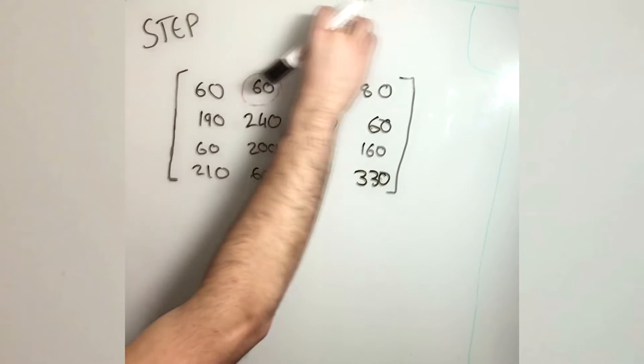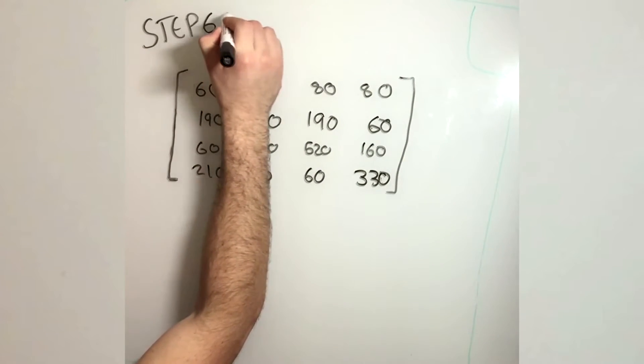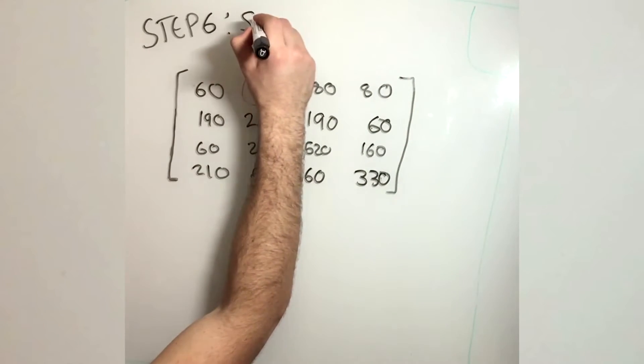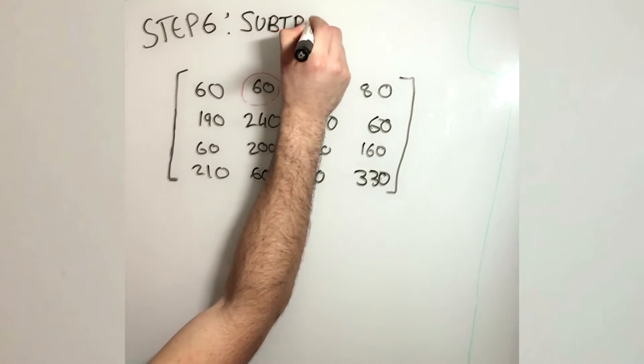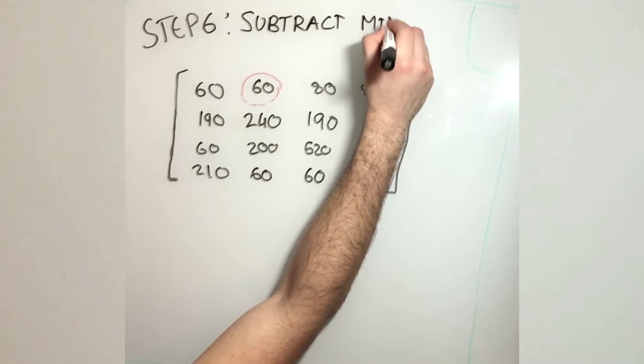So for the next step, we need to find the minimum value and subtract the whole matrix by that minimum value. In this case, the minimum value is 60. So we subtract the whole matrix by 60.